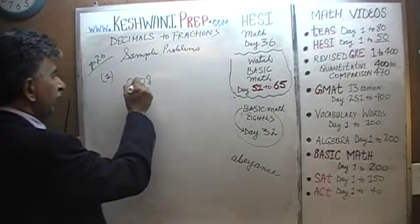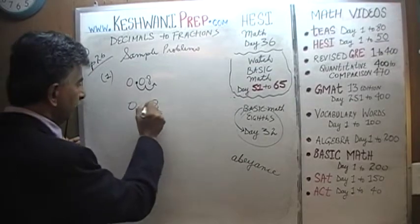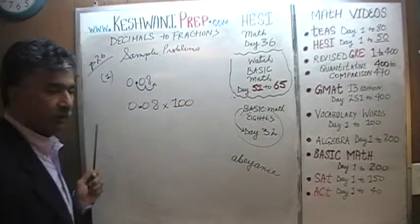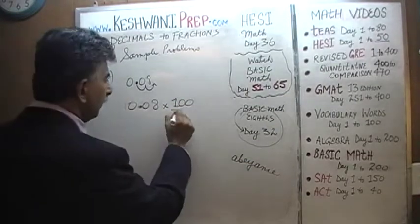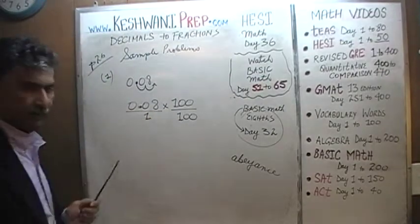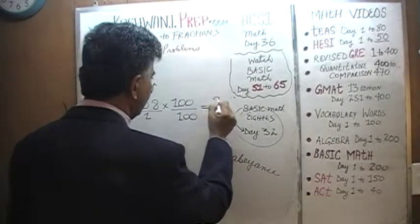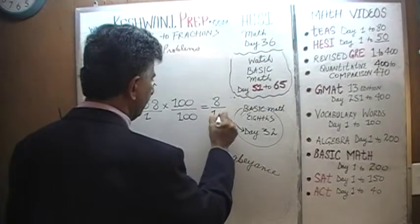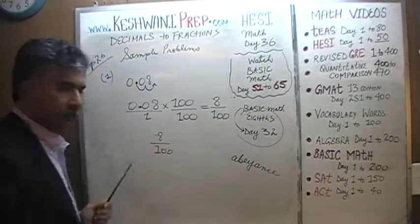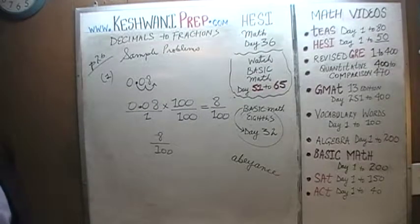For 0.08, we need to move the decimal two places. So we need to multiply it by 100. If we are going to multiply the top by 100, we must multiply the bottom by 100. Remember, if there is nothing on the bottom, that means there is a 1 there. Now 0.08 times 100 is just 8, and on the bottom we get 100 times 1, which is 100. We have to reduce it — let's divide top and bottom by 4.